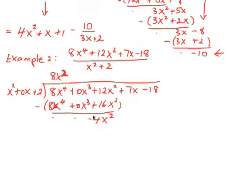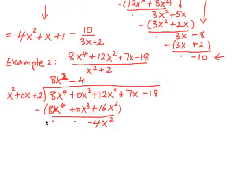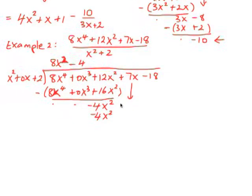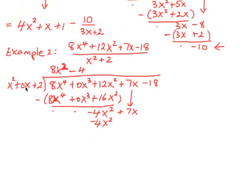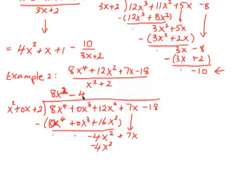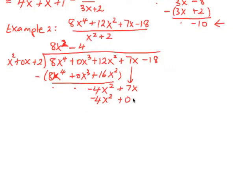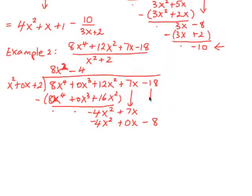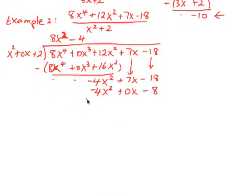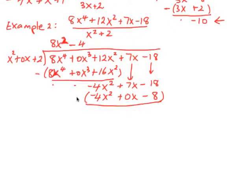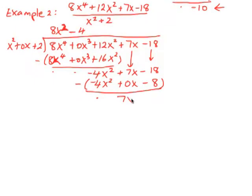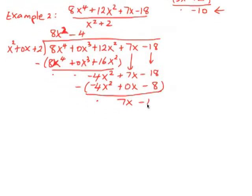We now say, what do we multiply x squared by to get negative 4x squared? Well, it will be negative 4. So we get negative 4x squared. We need to bring down the 7x. And it will be 0 by negative 4, which will be 0x. And finally, 2 times negative 4 is negative 8. So in this case, we need to bring this one down as well so we can do the full calculation. Put a line under it and we now subtract. Negative 4x squared minus negative 4x squared is 0. 7x minus 0x is 7x. Negative 18 plus 8 is negative 10.